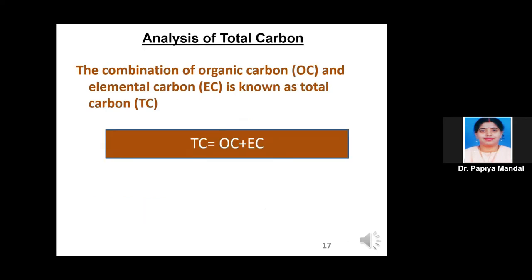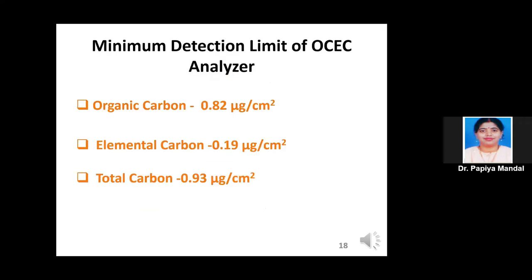The combination of organic carbon and elemental carbon is also known as total carbon: TC = OC + EC. The instrument has a minimum detection level. For organic carbon, the minimum measurable concentration is 0.82 µg/cm². For elemental carbon, it is 0.19 µg/cm². For total carbon, the minimum is 0.93 µg/cm².